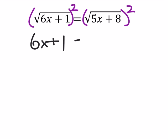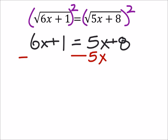Squaring both sides takes away our radicals. We get 6x plus 1 equals 5x plus 8. When we solve this, I want the x's on one side of the equal sign and all the numbers on the other side. I'm choosing to put the x's on the left because it will give me a positive coefficient of x, so I'm going to subtract 5x from both sides.